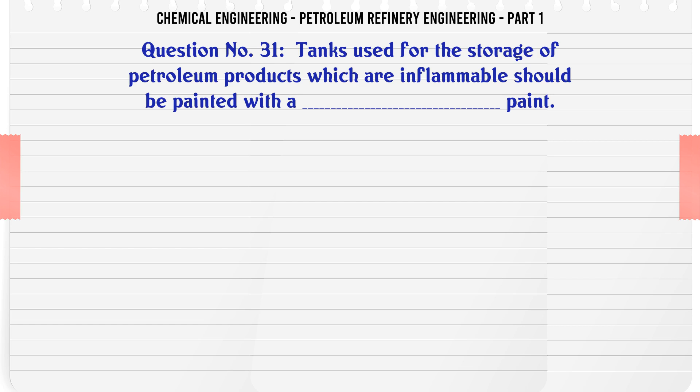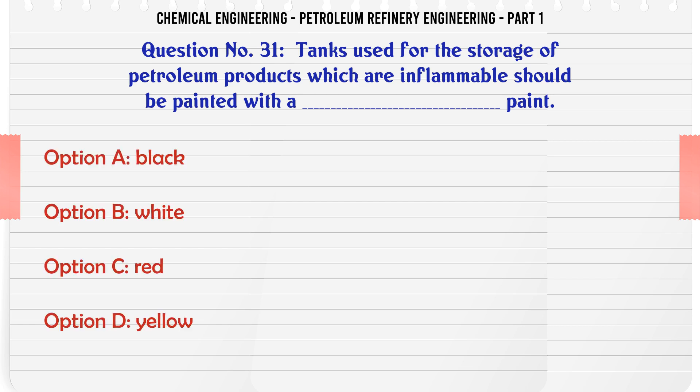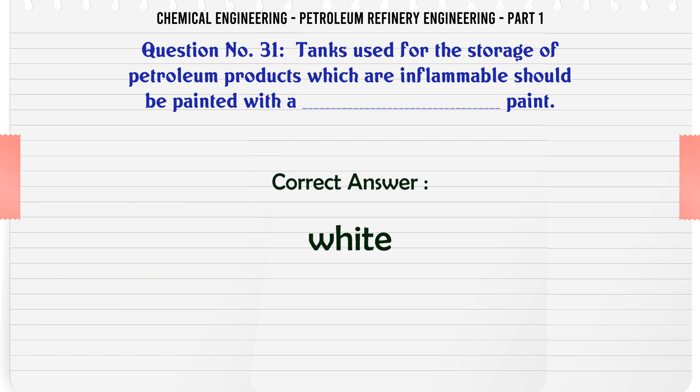Tanks used for the storage of petroleum products which are inflammable should be painted with: A. Black, B. White, C. Red, D. Yellow paint. The correct answer is White.